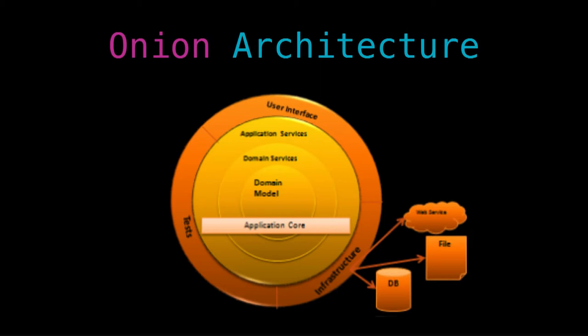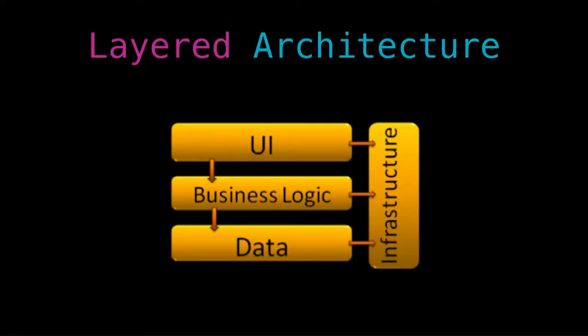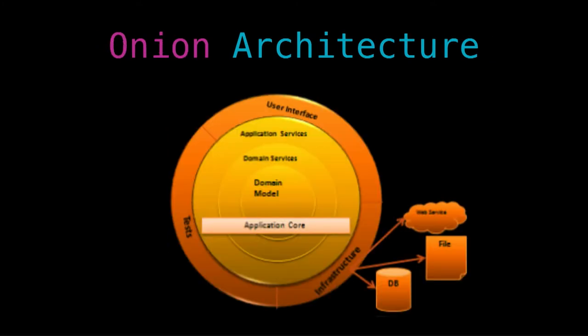The onion architecture was introduced by Jeffrey Palermo in 2008. At that time, most architectures were layered architectures, represented by boxes and rectangles. So the big idea of the onion architecture was to use circles instead.